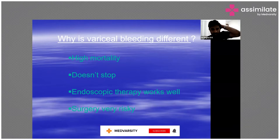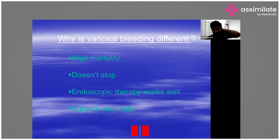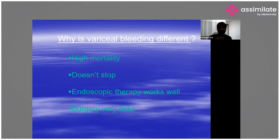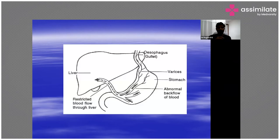The most important cause after peptic ulcer disease is variceal bleeding, which you will see frequently in medical, gastro, emergency room, or liver rotations. Esophageal or gastric varices are important because they usually don't stop by themselves — they require endoscopic therapy, not just medical therapy. They carry a very high mortality. Endoscopic therapy does work, so early endoscopic therapy plays a big role, and surgery can be very risky.